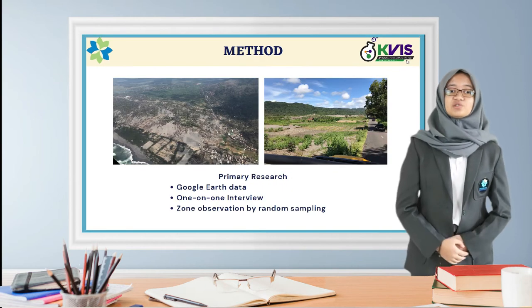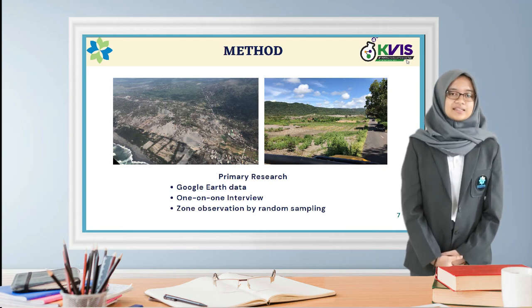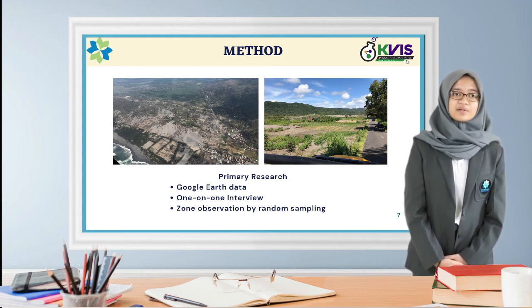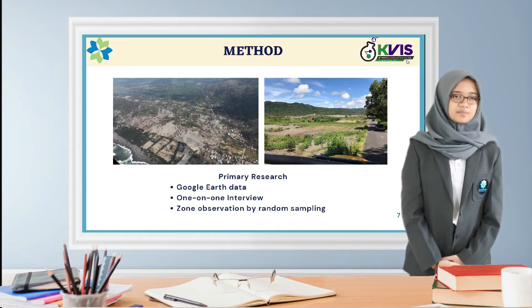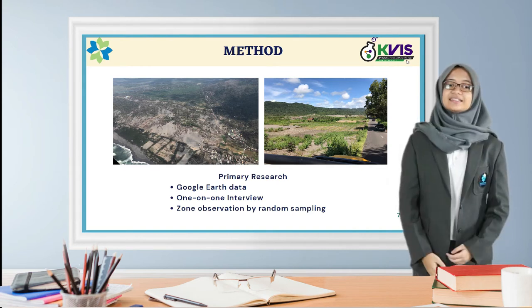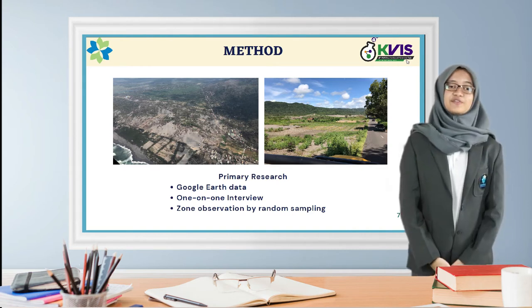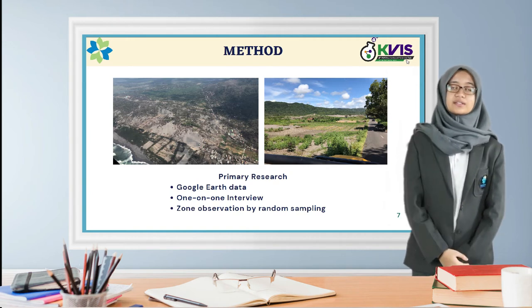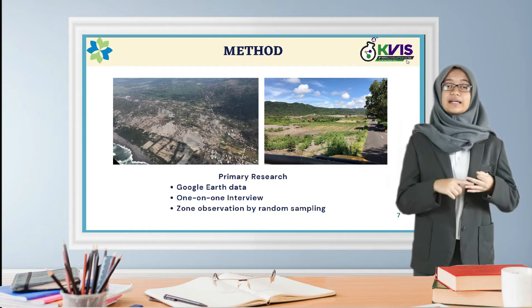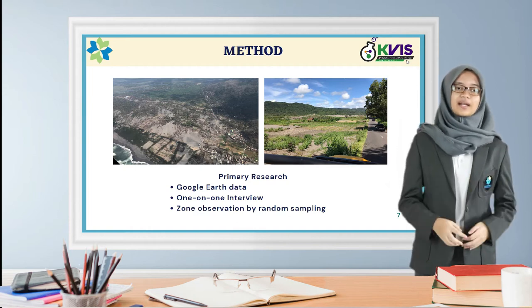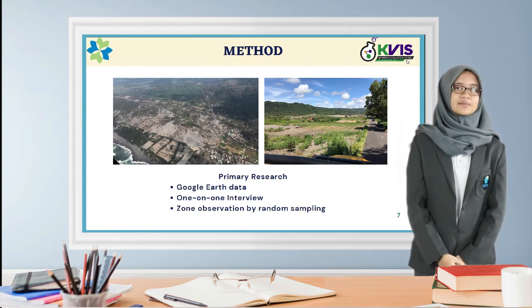Let's continue to the next part, which is the method. This research was conducted using primary and secondary methods. The primary method used sand dune landscape data from Google Earth to compare vegetation spread area over the years using digitization calculation. The interview was done with five respondents who were representatives of local communities, environment activist leaders, sand dune community members, and the Parangtritis Maritime Science Park.